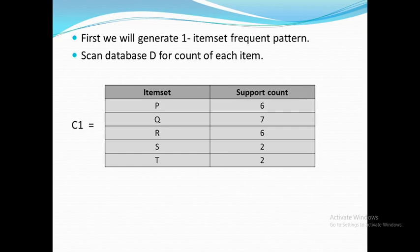A one-item-set means our item set contains exactly one element. We will represent the candidate item set by C1. It will contain 2 columns: item set and support count. The item set contains individual items which are P, Q, R, S, and T. Now we will find out the support count of each and every individual item.